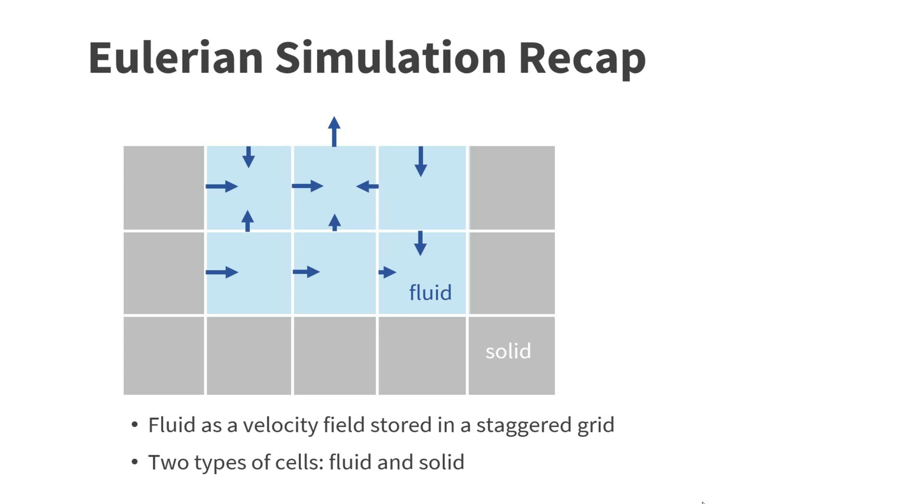So here is a short recap of the Eulerian fluid simulation method. We use a grid with two types of cells, fluid cells and solid cells. The fluid itself is represented by a velocity field. We use a staggered grid in which the two components of the velocity vectors are stored in different locations. The horizontal components are stored in the centers of the vertical cell faces and the vertical components in the centers of the horizontal cell faces. In this way, we can derive how much fluid flows from a cell to its neighbor in one simulation step.